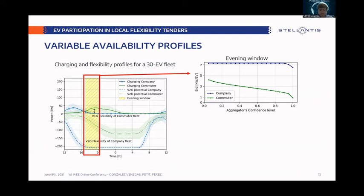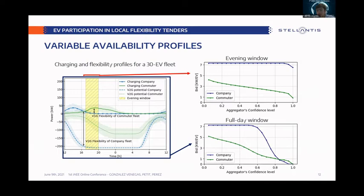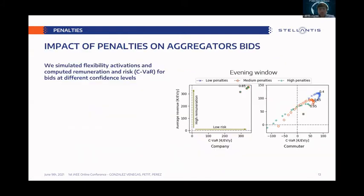If you want to be sure you will be able to provide the flexibility you committed, the commuter fleet can go to less than 2 kilowatts per EV — much less than the company fleet. For the full day window, these profiles are worse because neither fleet can provide flexibility with 100 percent certainty at any time of day, as they are not connected for some periods. When we simulate activations and analyze revenue and risk, the company fleet — which is really reliable — can provide high levels of flexibility with high confidence, but the commuter fleet cannot provide high flexibility with high reliability.